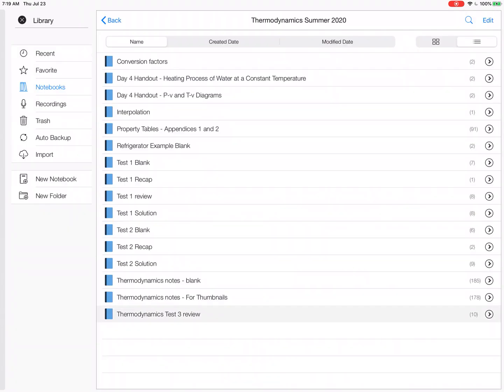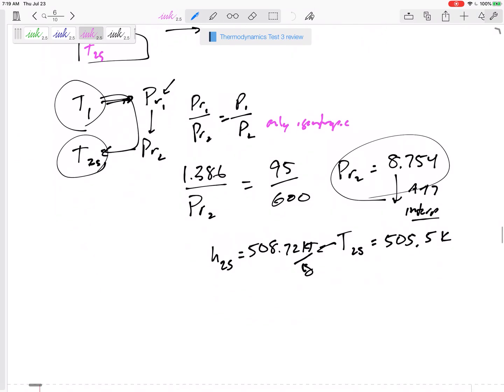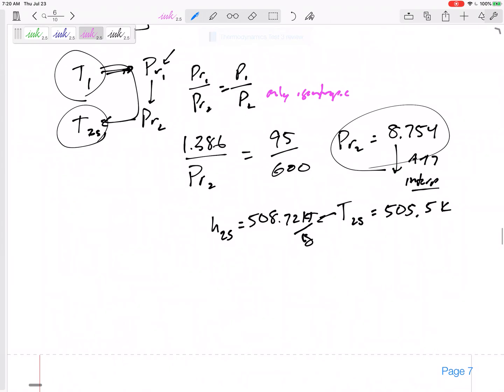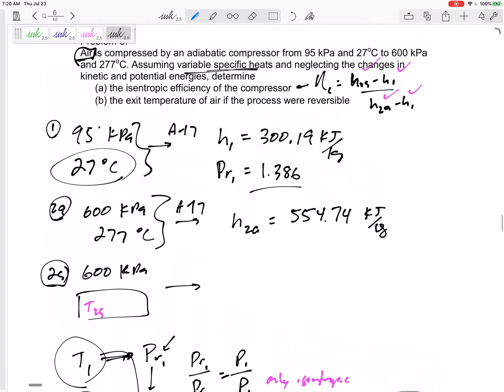So once I've got H2S, then I've got all this. I can find the isentropic efficiency. This isentropic efficiency eta, this large script n, would be...